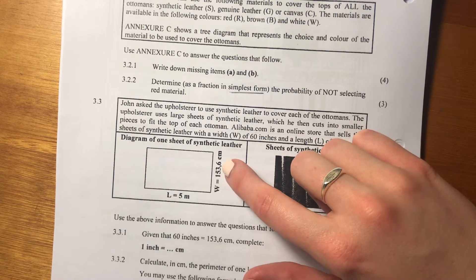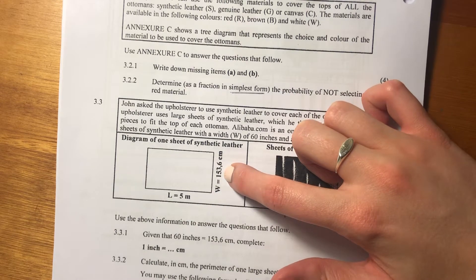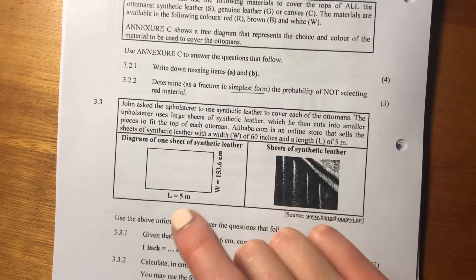And they've converted our inches here, the 60 inches, into centimeters for us. So this 60 inches is width, and they've converted it into centimeters for us. So they've actually given us a conversion.